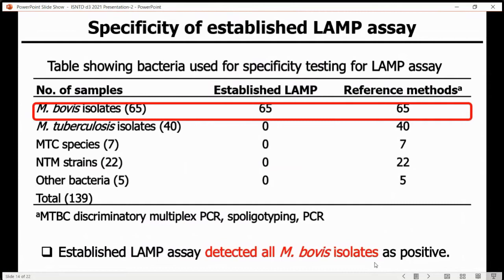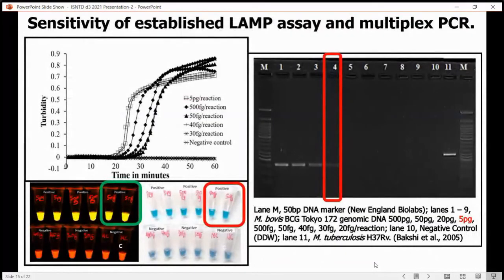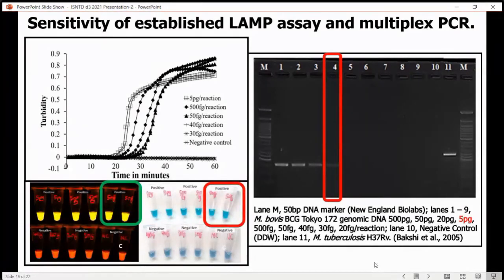We tested the specificity of this LAMP using 159 isolates, of which 65 were Mycobacterium bovis. The established LAMP assay detected all 65 as positive and showed no cross-reactivity on other isolates or negative controls. We checked the sensitivity of this LAMP, and the sensitivity was 50 femtograms, which is equivalent to 10 bacterial genomes, and in comparison to multiplex LAMP, our LAMP assay was quite sensitive.